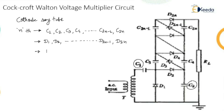Across the circuit a load resistance is added. You can see there is a load resistance which increases along with the capacitors from C1, C2, C3, C4 and so on up to C(2n), and the diodes D1, D2, D3, D4 and so on up to D(2n). This is the particular circuit called the voltage multiplier circuit, where we need one transformer.